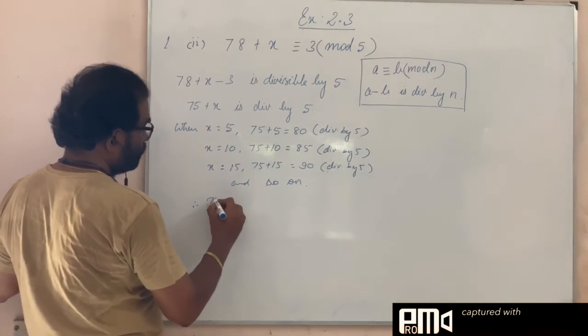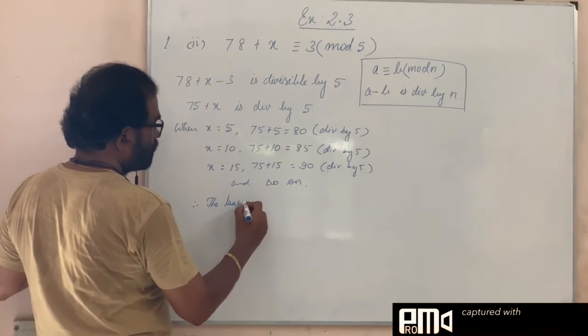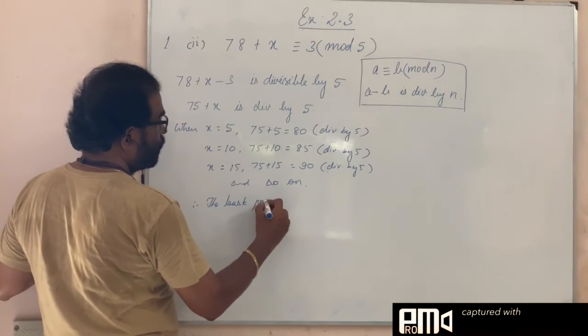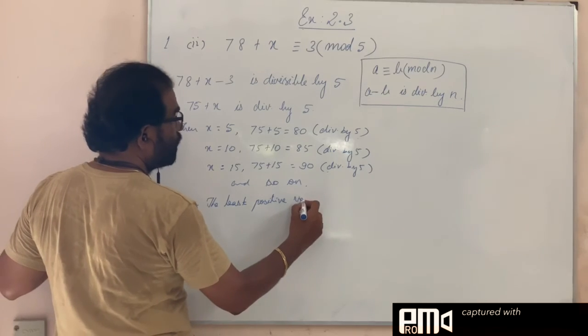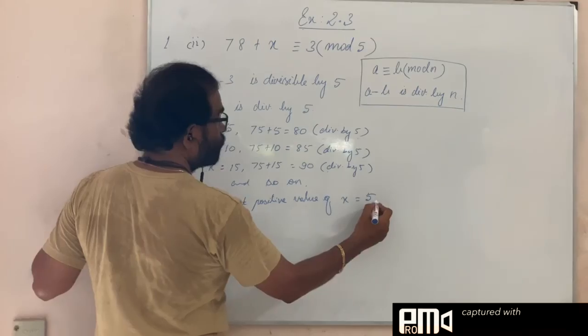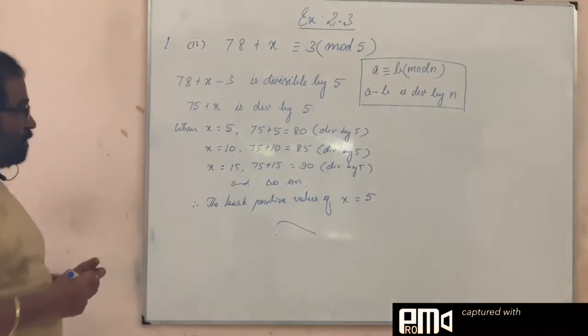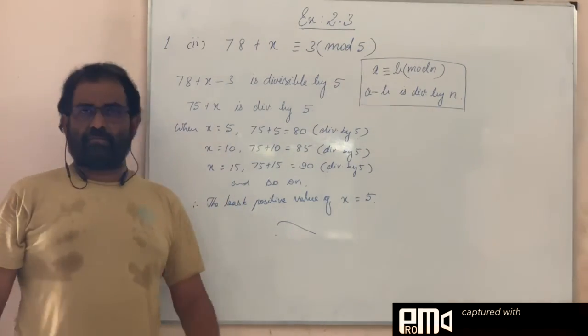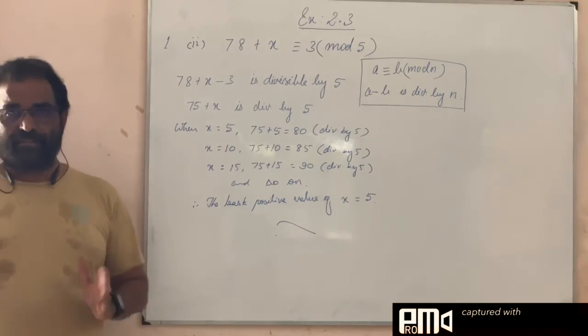Therefore, the least positive value of x is equal to 5. Thank you.